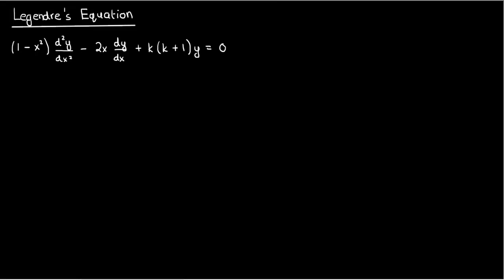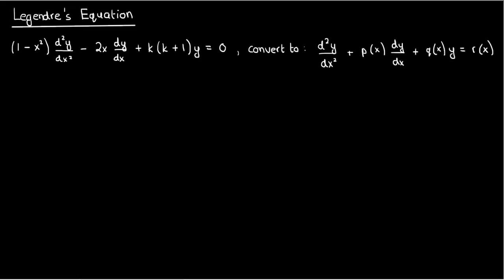To solve this ODE by the series solution method about the point x₀ equals 0, we first need to convert it to the form d²y/dx² plus p(x) dy/dx plus q(x)y equals r(x). Then we need to check whether p, q, and r are all defined at x₀, since that's a required condition for the series solution method to be used.